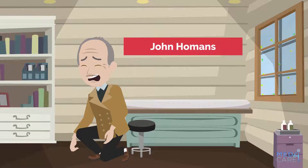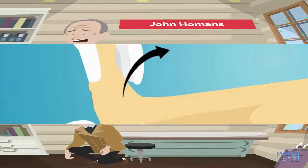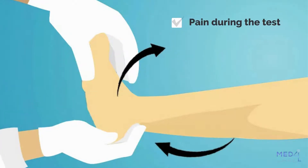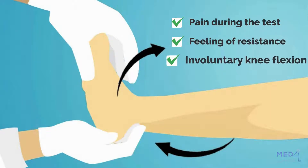Let's see together how the test is carried out. A forced dorsiflexion on the foot is performed upwards. The sign is positive when, following pressure, one of these occurrences is present: pain during the test, a feeling of resistance, or involuntary knee flexion.